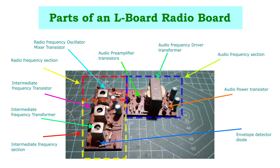The weak demodulated audio signal is then amplified using an audio pre-amplifier stage. The output of the audio pre-amplifier stage is then fed to a power amplifier, where the audio signal is further amplified. The output from the audio power amplifier is fed to a loudspeaker. The loudspeaker converts the audio signal from the power amplifier into sound waves.